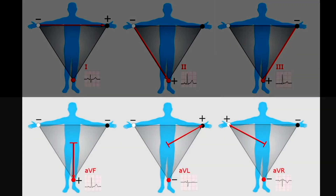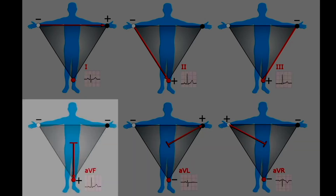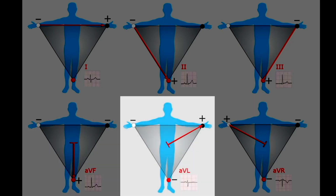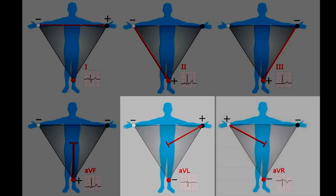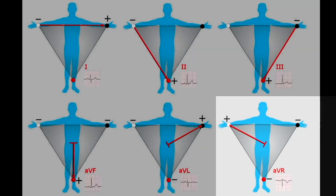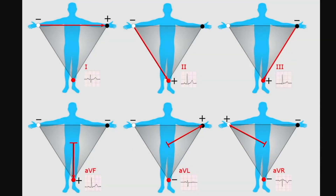Continuing along, AVF, AVL, and AVR are additional different looks at the electrical conduction. AVF is looking from the heart straight down to the left foot. AVL is looking from the center of the body out to the left arm. AVR is looking from the center of the body out to the right arm. These are the views you get on a 12-lead ECG.